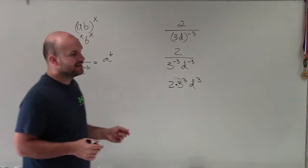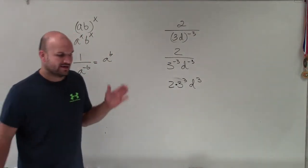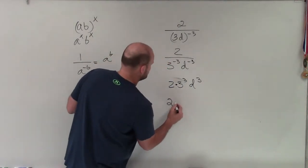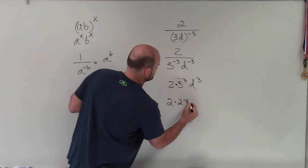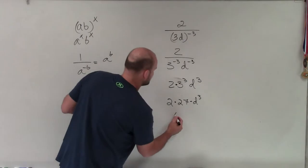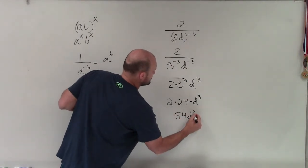Now obviously, we can cube 3. 3 squared is 9. So 3 cubed is going to be 27 times d cubed. And then 2 times 27 is going to be 54 d cubed.